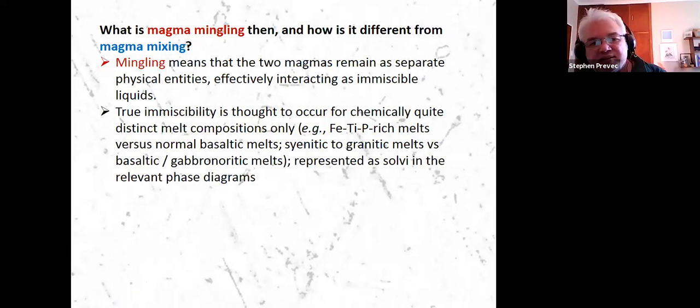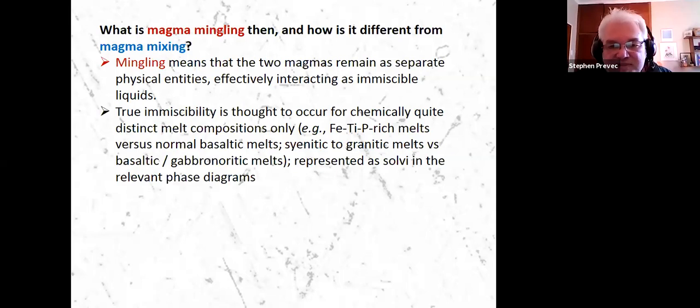Magma mingling. Magma mingling implies that the two magmas are staying as separate physical phases or entities. So they are behaving as though they are immiscible, at least temporarily. True immiscibility historically has been treated as kind of a marginal condition in normal magmas and kind of freak circumstance that we don't really need to worry about. And typically it's only in cases where the magmas are unusually enriched in iron, titanium and phosphorus relative to normal basaltic systems that we might expect to see truly immiscible behavior.